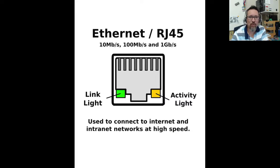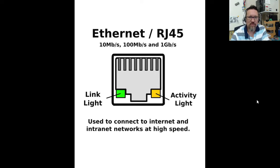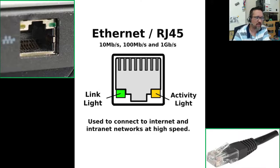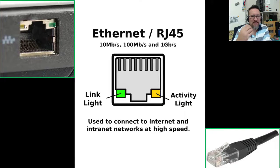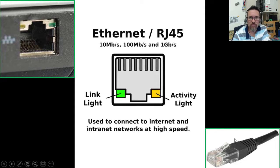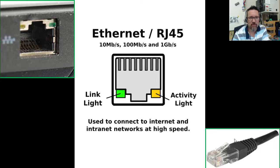We have the Ethernet port, or RJ45 port. An RJ45 or Ethernet port is what we connect a network cable into to connect our computers to a local network or a switch or a hub. If you look at your computer right now you'll probably have a port that looks just like this. It's got a green light and a yellow light — those are activity indicators. Green means there's a link; yellow means there's activity and it flashes. That's the RJ45 cable — an Ethernet cable that connects you to the local area network.